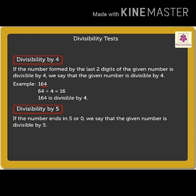Next, divisibility by 5. If the number ends in 5 or 0, we say that the given number is divisible by 5.